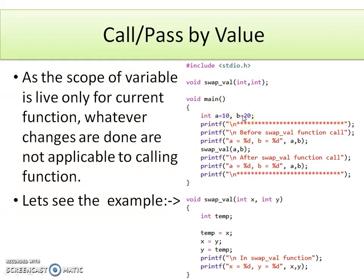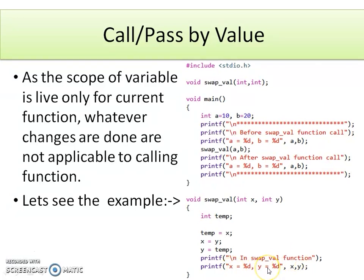Whatever task we perform in the swapVal function is done on the values of variables a and b. A and b are declared with values 10 and 20. Before swapping we display the content of a and b. We call the function; control transfers to swapVal where x and y hold the values of a and b — that is 10 and 20 respectively. Here the task of swapping or exchanging two numbers is done. At the end in the swapVal function we display the content of x and y, then return back. In the main function again we display the content of a and b.